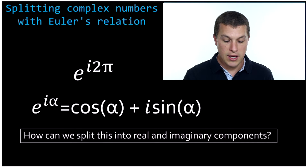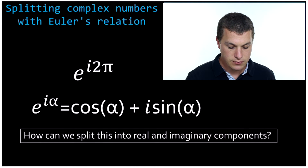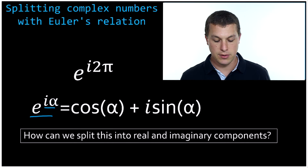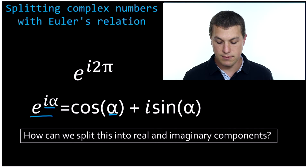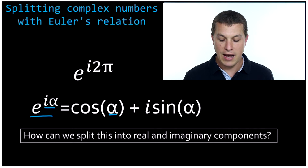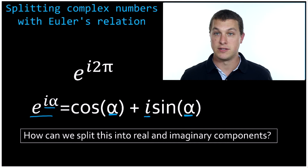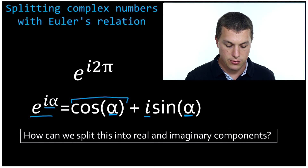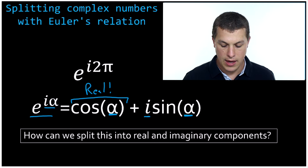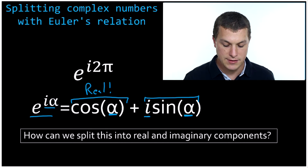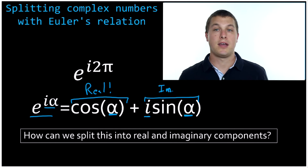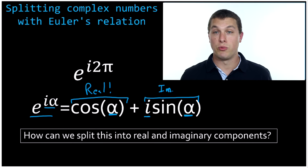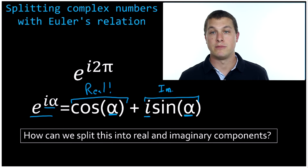Euler's relation is a useful relationship that tells us that if we have e to the i times something — e to the i times alpha — then we take the cosine of that same alpha, and then add i times sine of that same alpha. What's nice about this is it splits things apart into the real component, which is the cosine part, and the imaginary component — the part with the i. Euler's relationship allows us to take any complex number and split it apart into a real and imaginary component. Let's do a few example problems.